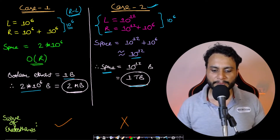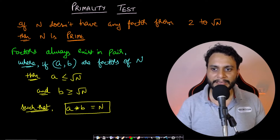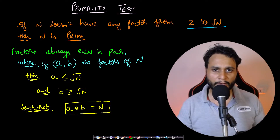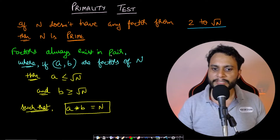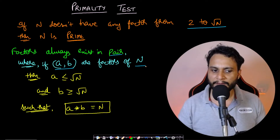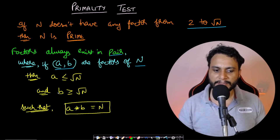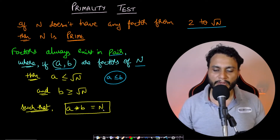Before starting the segmented sieve, you should know about the primality test: if N doesn't have any factor from 2 to square root of N, then N is a prime number. As shown in my previous video, factors always exist in pairs. If (a, b) are factors of N, then a ≤ √N and b ≥ √N, given that a ≤ b such that a × b = N.